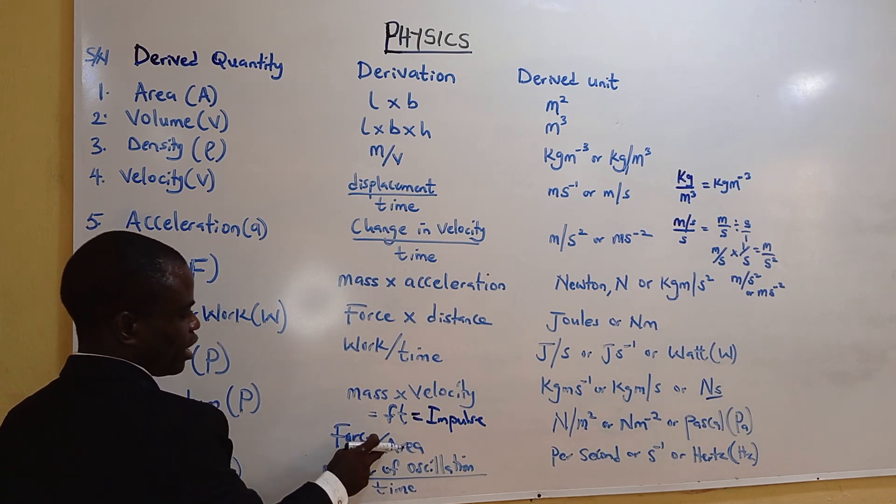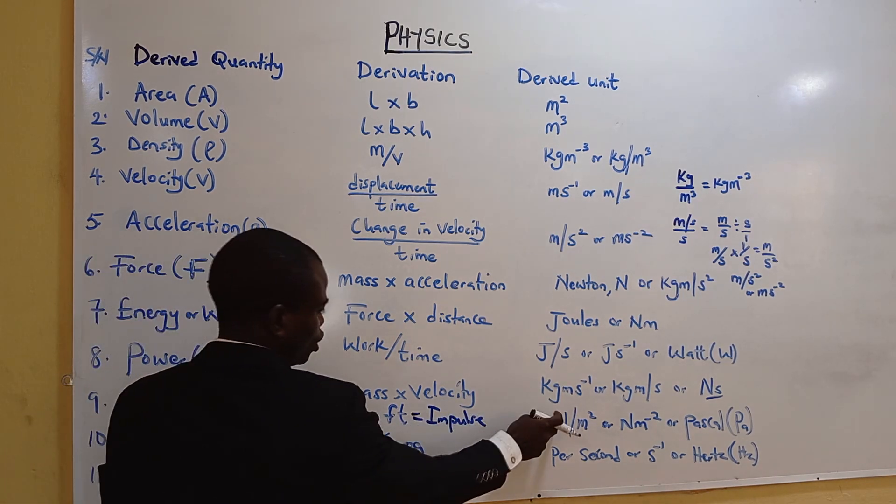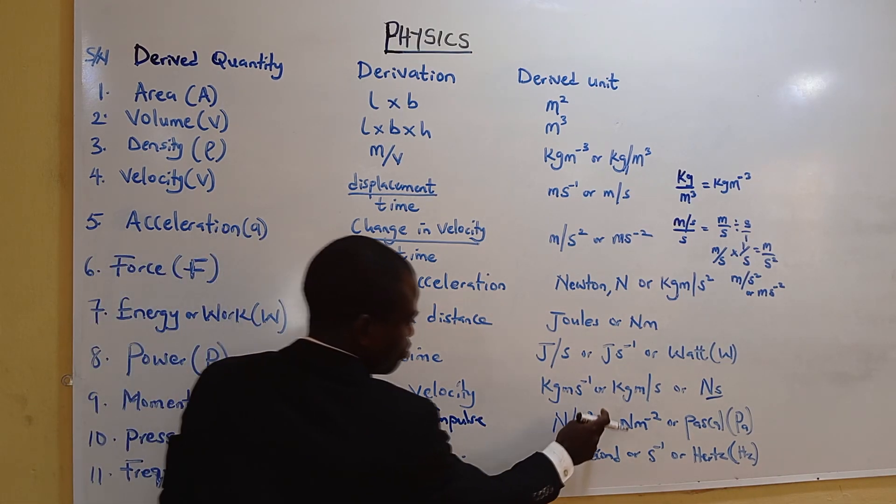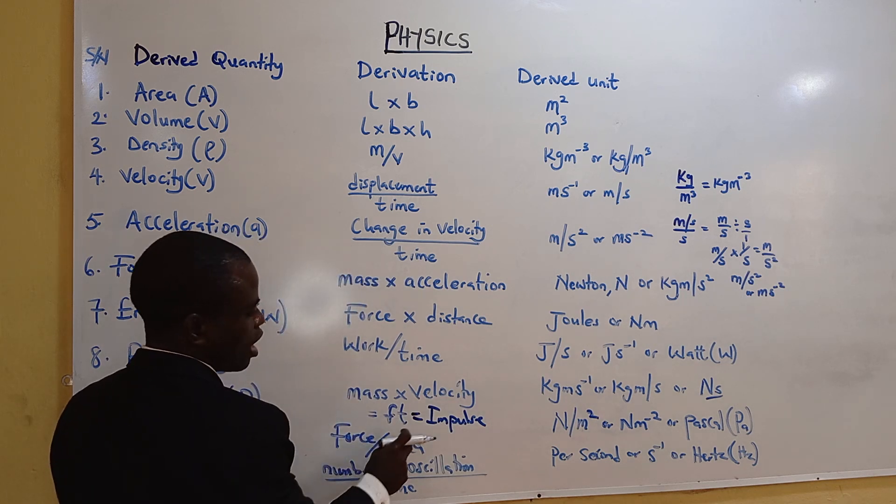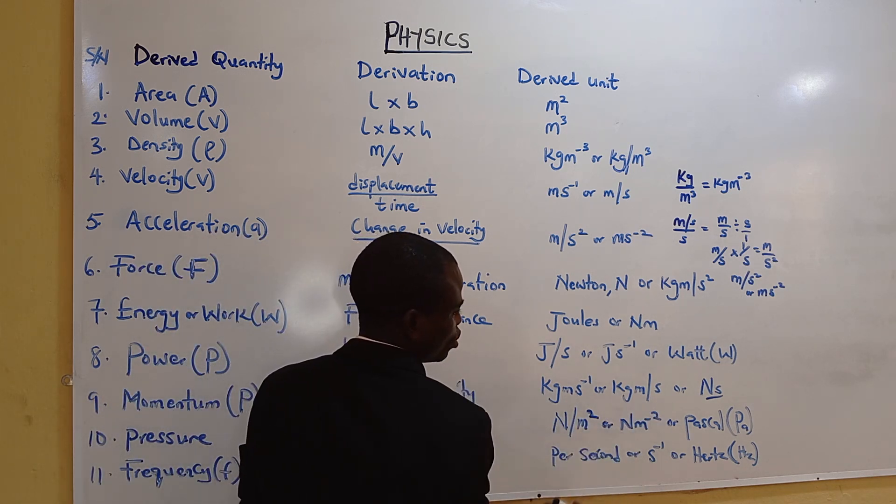Pressure is force over area. Unit of force is newton. Unit of area is meter squared. That's newton per meter squared. When you move this slash, it becomes minus two. Or pascal.